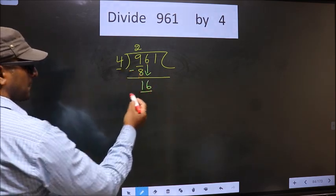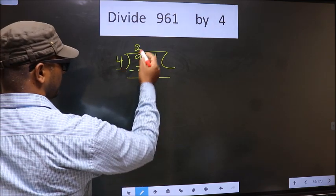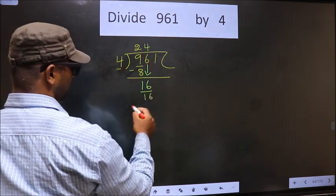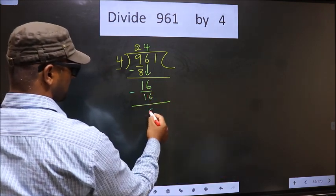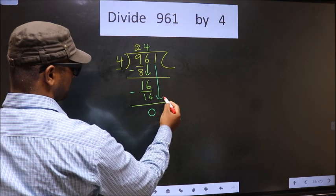Now you bring down the beside number, so 6 down. Now here 16. When do we get 16 in the 4 table? 4×4=16. Now you subtract 16 minus 16 equals 0. Now you bring down the beside number, so 1 down.